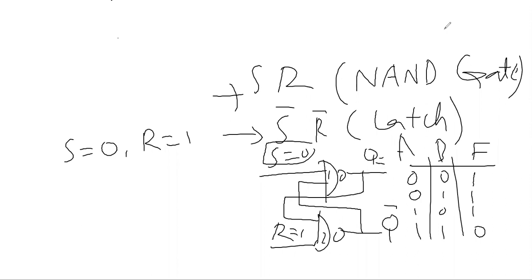Q will be 1, and Q dash will be opposite to Q. So Q dash is 0. Since Q is given as input to the second gate along with 1, and 1 and 1 gives 0, therefore Q is equal to 1 and Q dash is equal to 0.